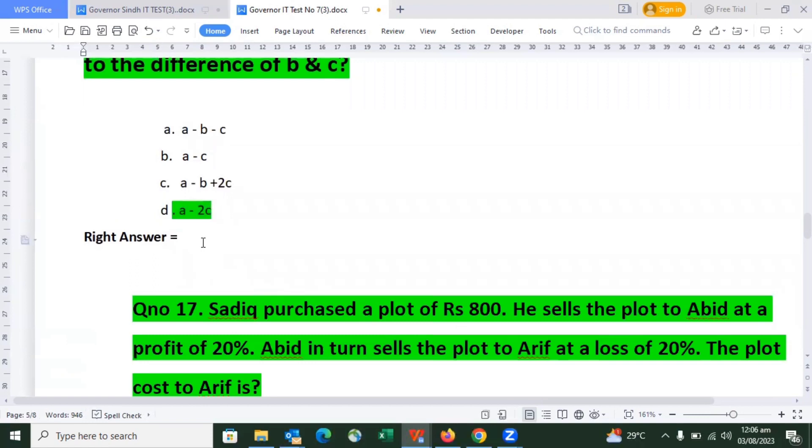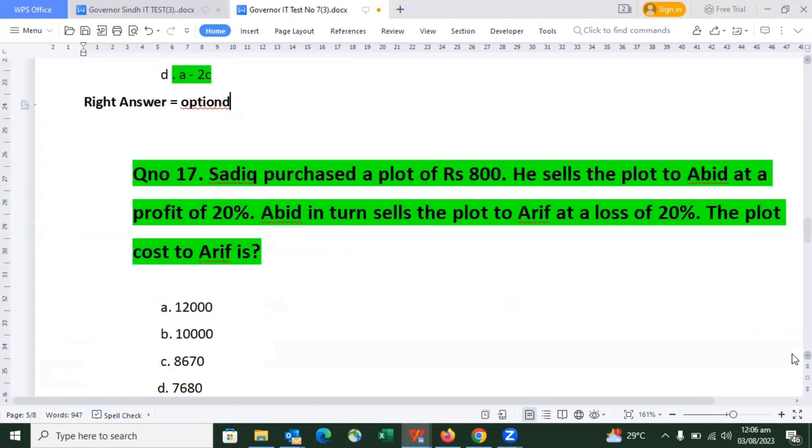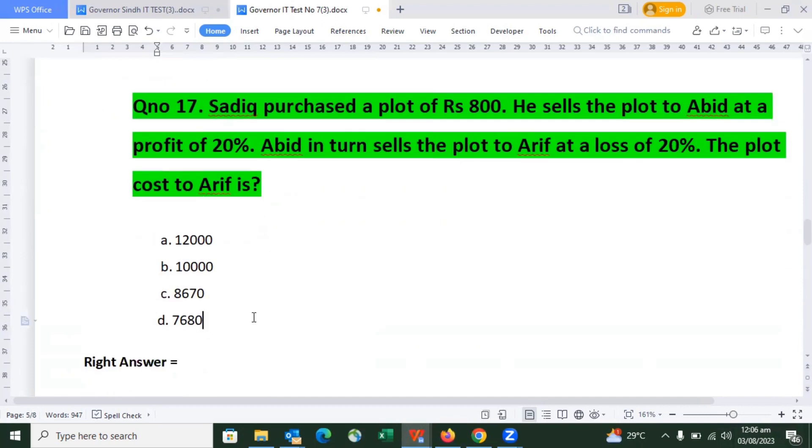Another mathematics question, number 17: Sadiq purchased a plot for Rs. 800. He sells the plot to Arbit at a profit of 20%. Arbit then sells the plot to Asif at a loss of 20%. The plot cost to Asif is the right answer we found, which is option D.